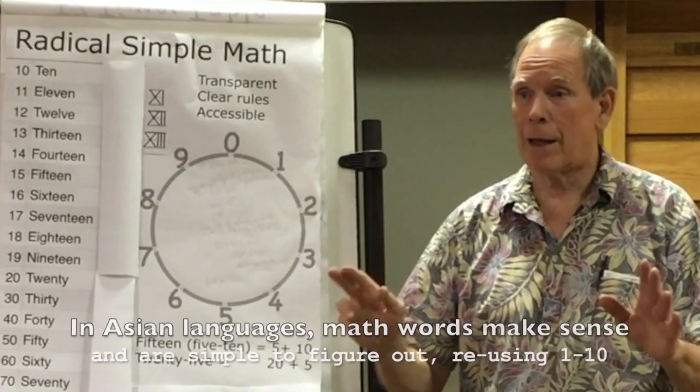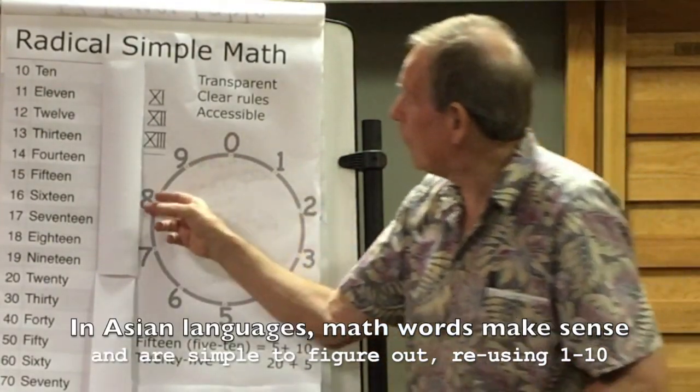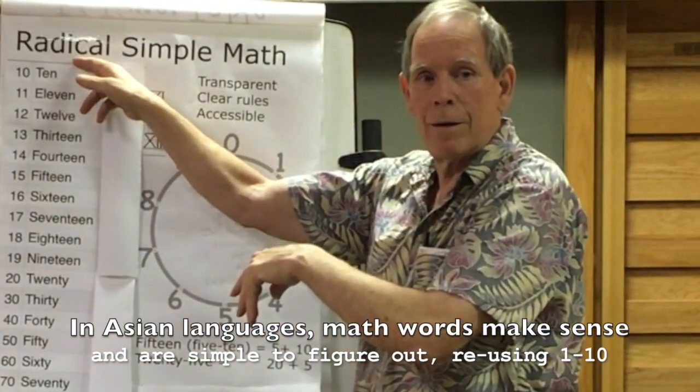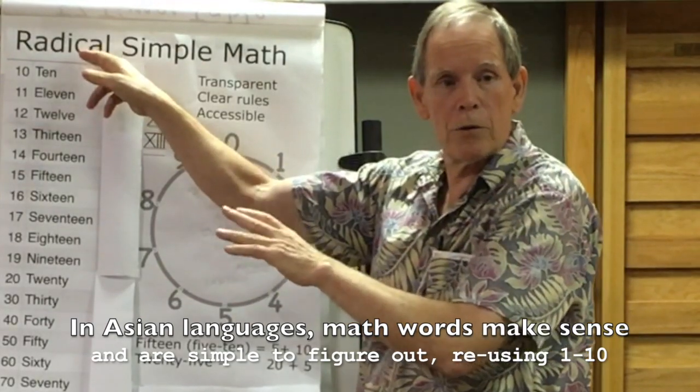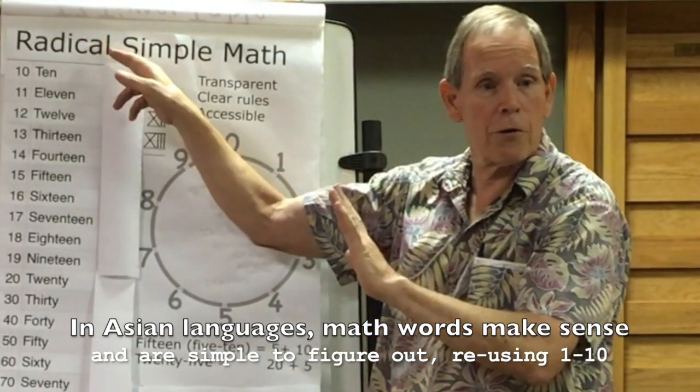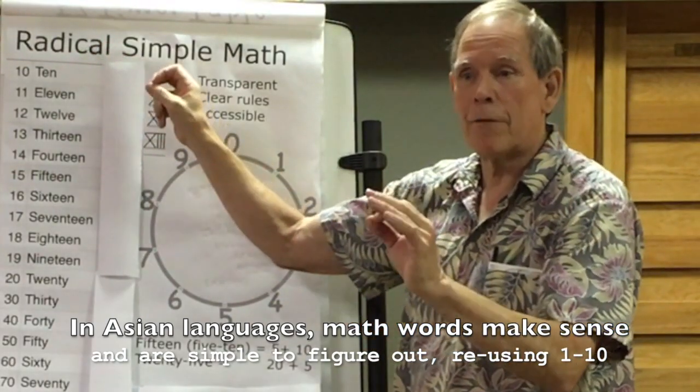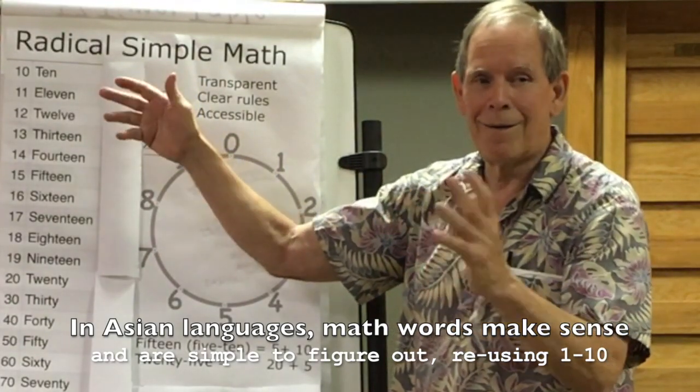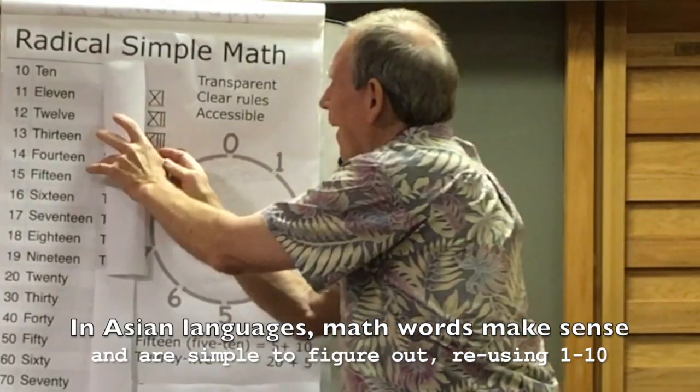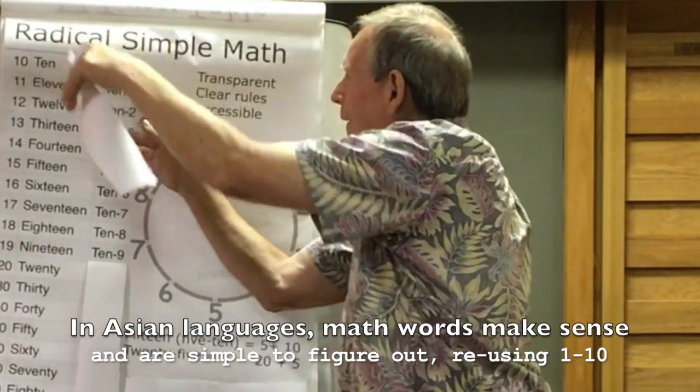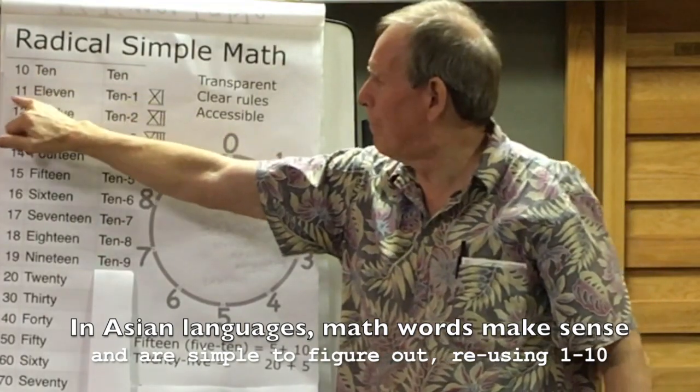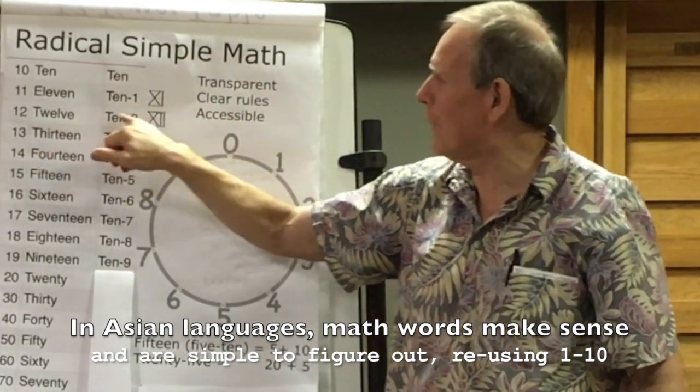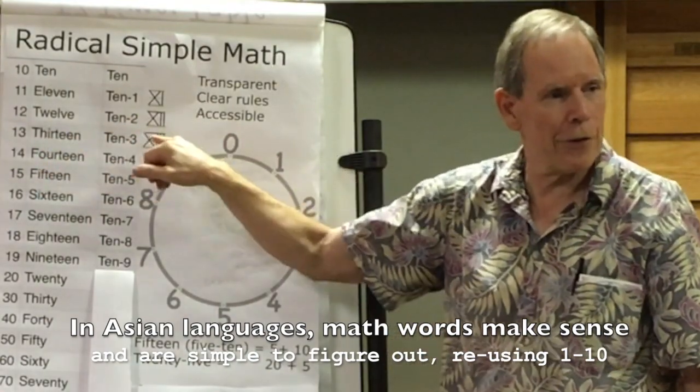So the simple math system that I propose is using the eleventh word after ten, like Asian languages, centuries they've done it. The eleventh word is a hundred. How do they do it? One after ten is ten-one. Two after ten is ten-two. Three is ten-three, ten-four, ten-five.